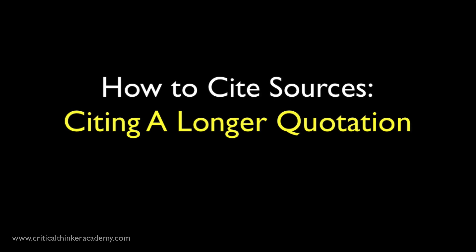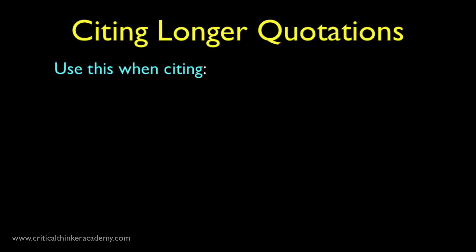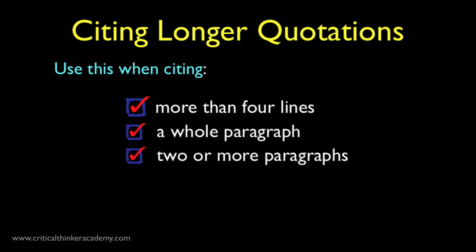You use an in-text citation for quotes that are shorter, but once your quotation gets around four sentences or longer, it makes more sense to give the quote its own paragraph. As a rule of thumb, you should be using this block quote style when citing a quotation that's more than four lines, a whole paragraph, or multiple paragraphs.